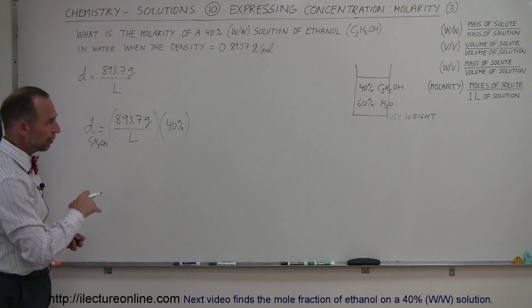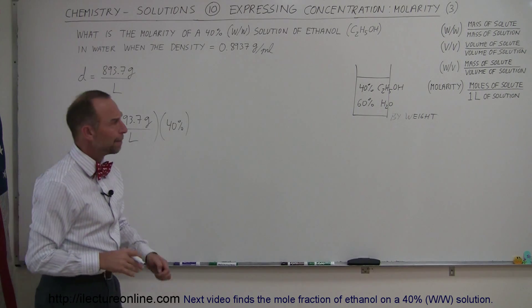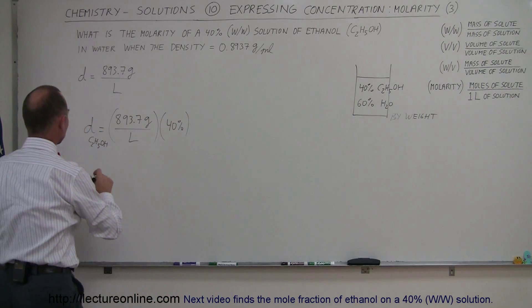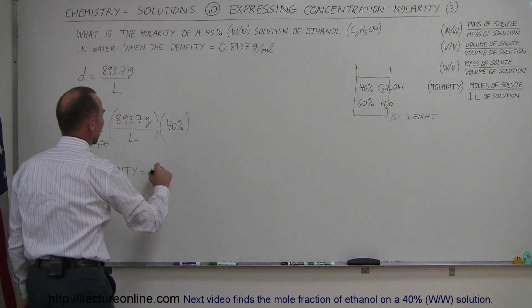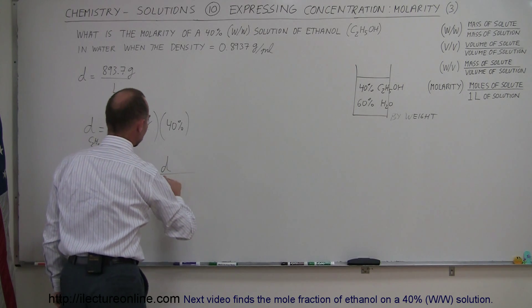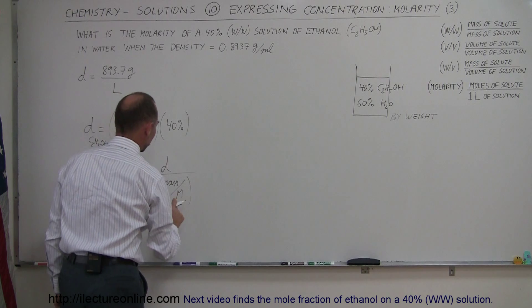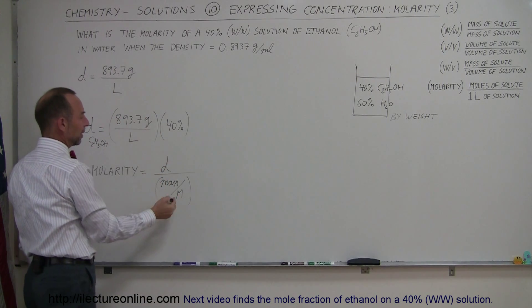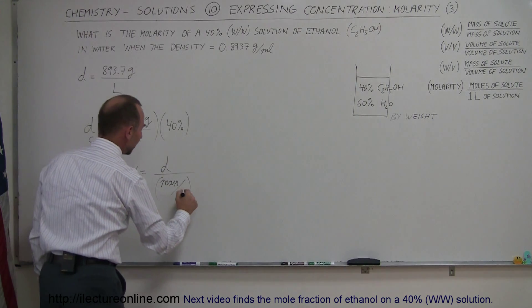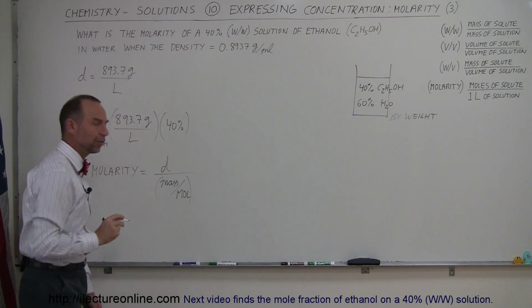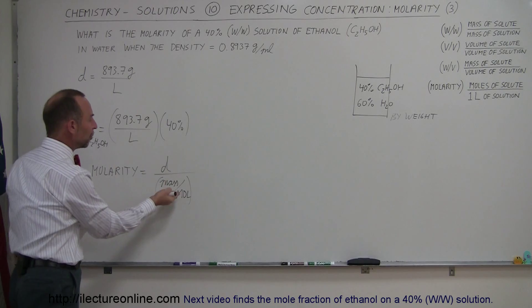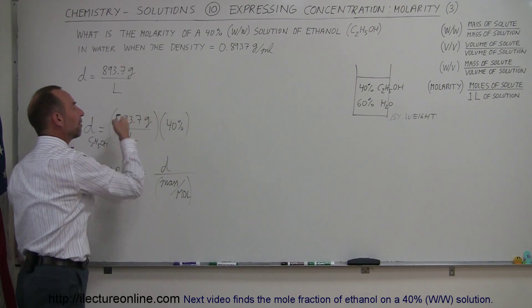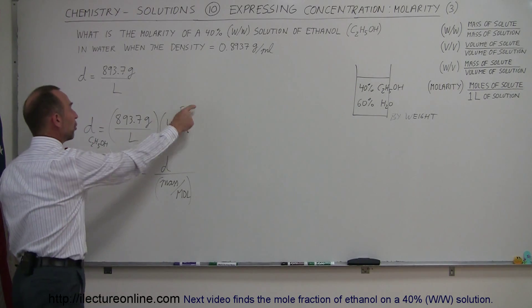So now we have to convert that to molarity. We can say molarity equals the density divided by the mass per mole. If we divide by the mass, the grams will disappear, and dividing by 1 over moles - maybe I'll just write moles, it's easier to see - means that mole unit goes to the top. We'll have moles in the numerator and end up with moles per liter.